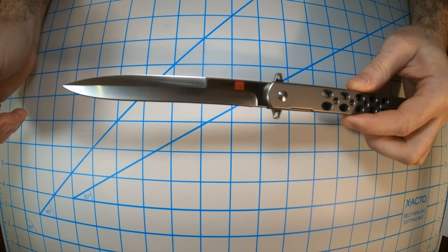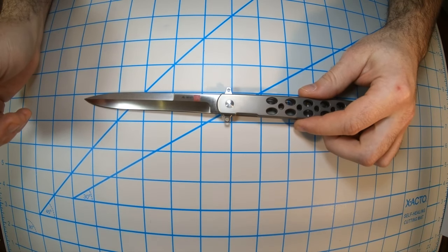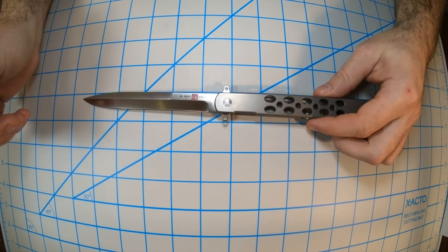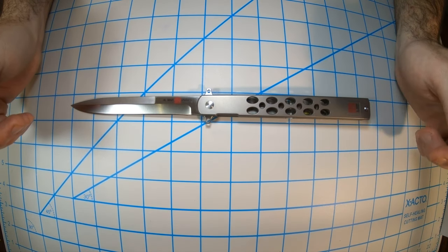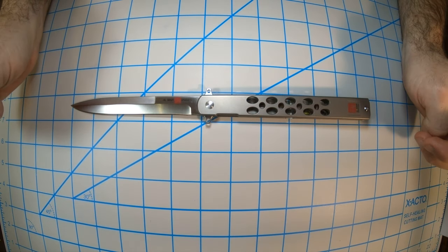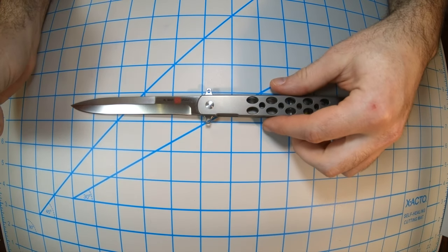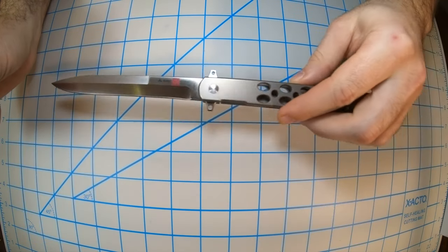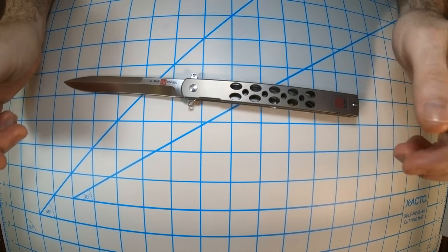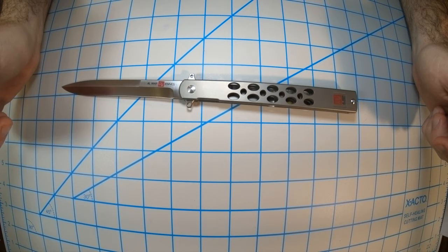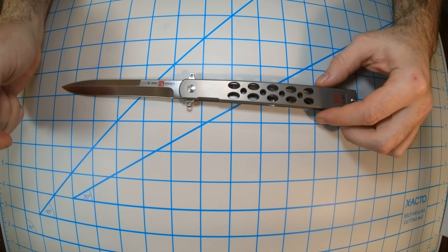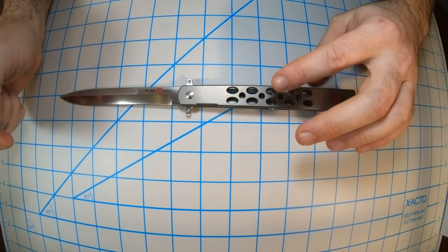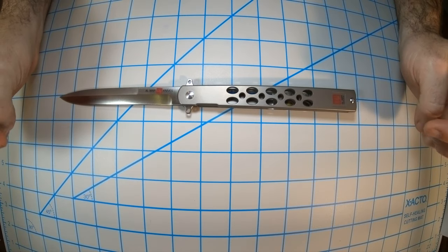The blade is made of D2 steel and the length is 5 inches and 0.11 inches thick. The handle is made of titanium and it's skeletonized, as you can see the holes in it.